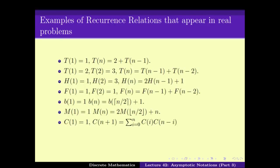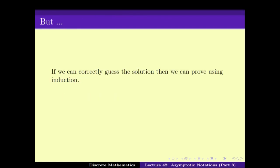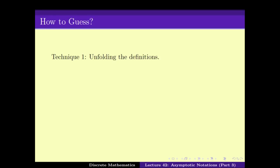Here are some of the recurrence relations we have looked at in the last few videos, and the question is how to solve them. The first approach we learned was to guess the solution and then prove it by induction. If you can correctly guess it, you can use induction to prove it. But how do you guess the solution? One simple method is what we call unfolding the definitions, by which we can possibly guess the solution.